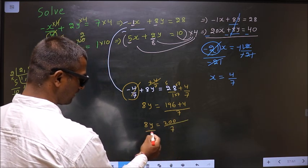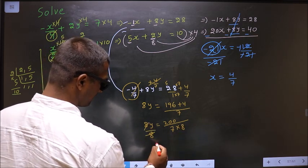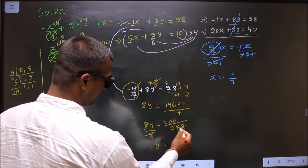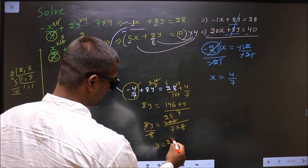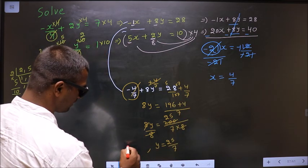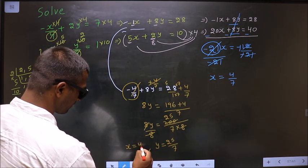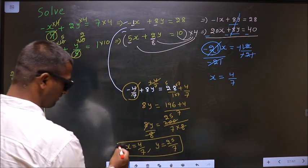So now to get y divide by 8. So this cancels out, I get y equal to 25/7. Earlier we got x equal to 4/7. This is our answer.